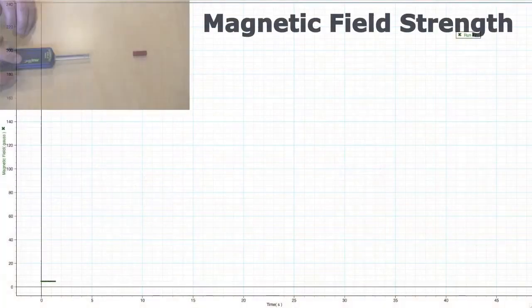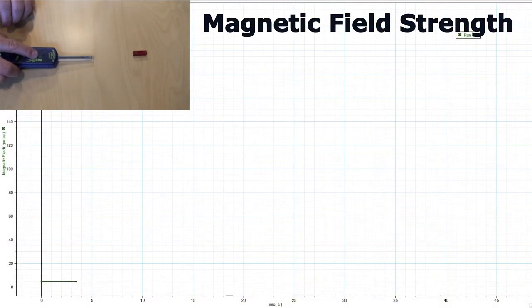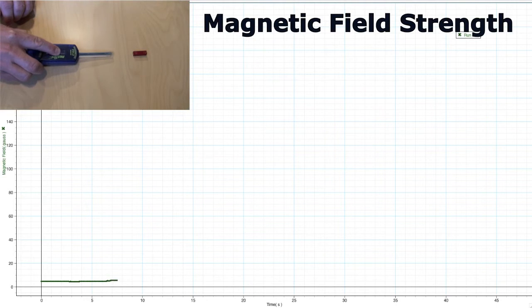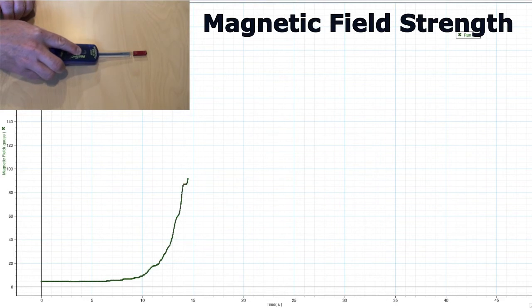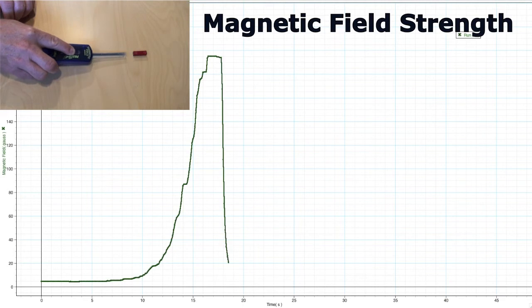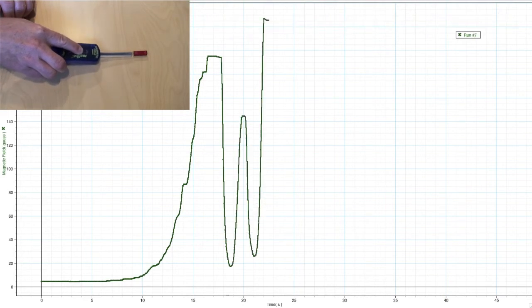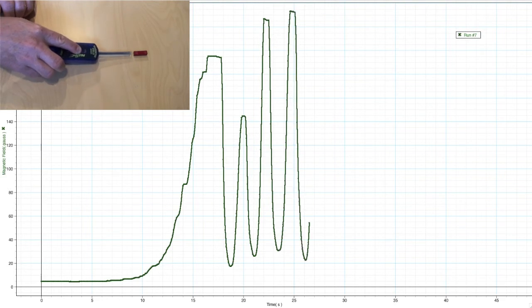This is a graph of magnetic field strength. Watch what happens to the graph as we move closer and closer to the magnet with the magnetic field sensor. The line on the graph goes up. This shows that as you get closer to the magnet, the magnetic field gets stronger. See as we move back and forth how the magnetic field goes up and down in strength.